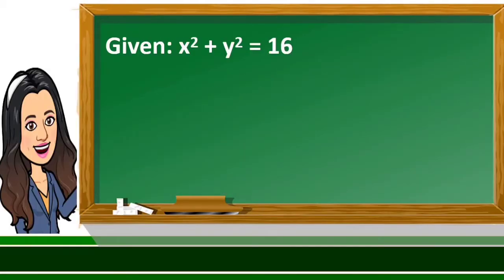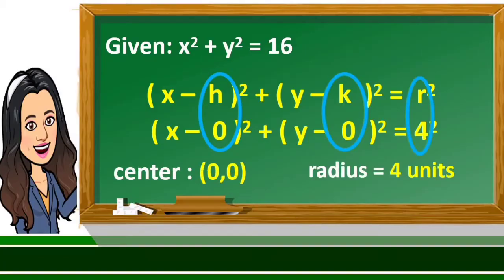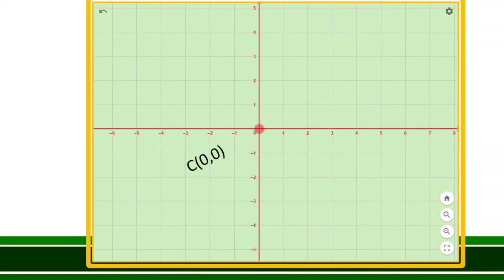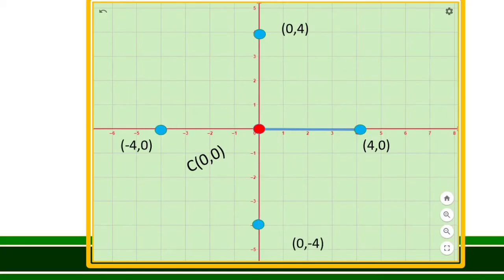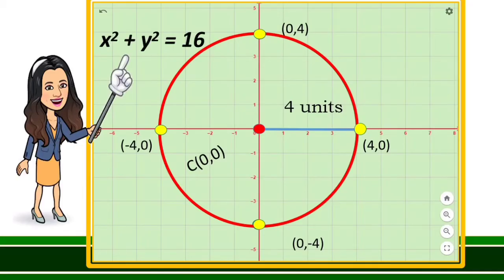To solve the problem, first write the given equation in standard form. The center is at point (0, 0) and its radius is 4 units. Locate the point (0, 0) on the coordinate plane — it is at the origin. Count out 4 units to the right, above, to the left, and below the center to create 4 points on the circle. Connect the points with the best curve to sketch the graph, then label it. This is the graph of x squared plus y squared equals 16.